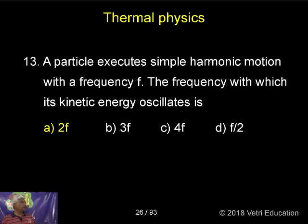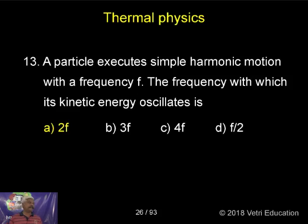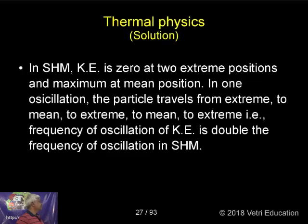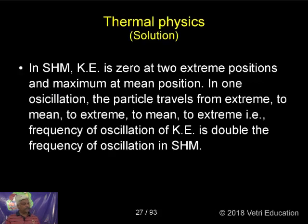A particle executes simple harmonic motion with a frequency r. The frequency with which the kinetic energy of the oscillator changes — kinetic energy is half m v squared. At certain points, kinetic energy is zero. This is the key thing to understand.